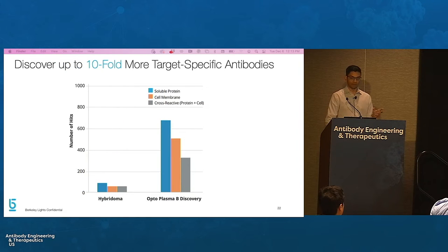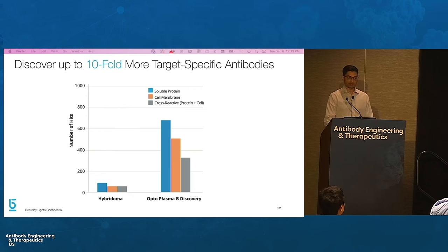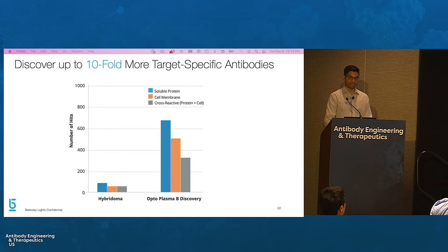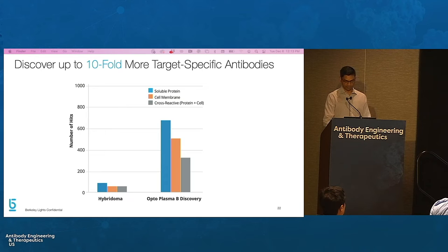Looking at the numbers, the Opto-Plasma B discovery workflows discovered nearly eight times as many hits against the soluble TIM3 antigen, nearly nine times as many hits against the cell membrane antigen, and nearly six times as many hits that cross-reacted with both antigens.